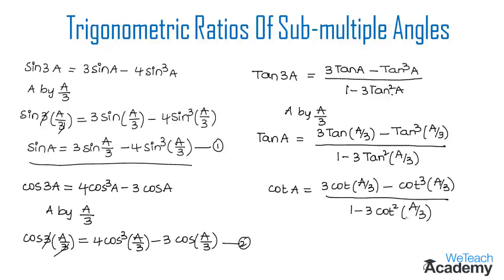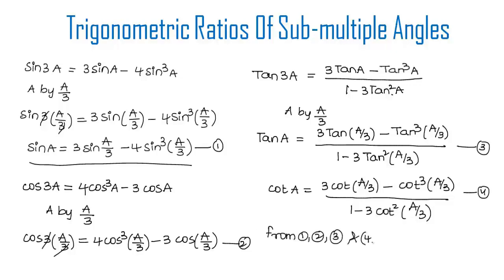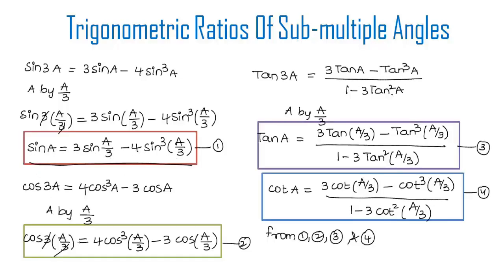This is the formula for the submultiple angle a by 3 for cot. We name the formula for tan a as equation 3 and cot a as equation 4. From all four equations we have derived the formulas of submultiple angles a by 3 in terms of sine, cosine, tan, and cot. Make a note of all these formulas as they are very important in solving examples in further videos.